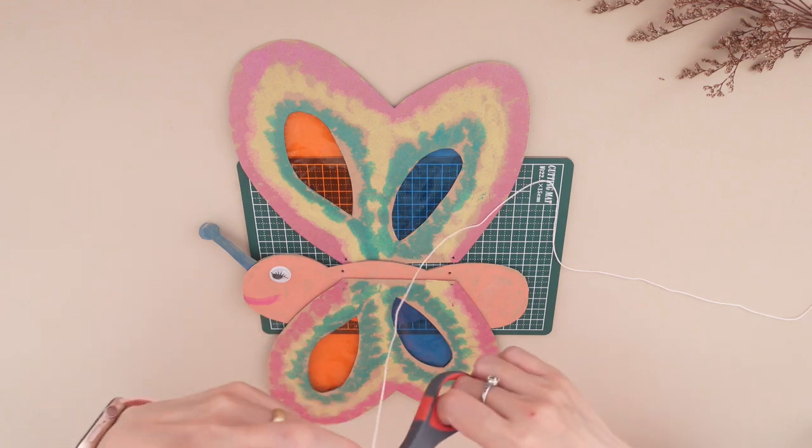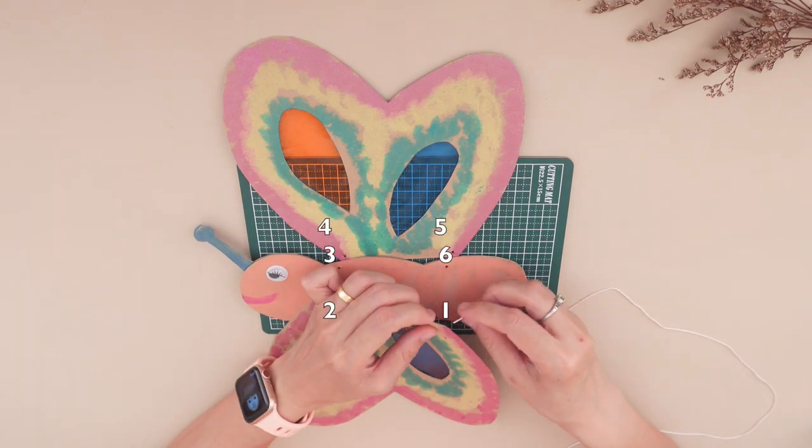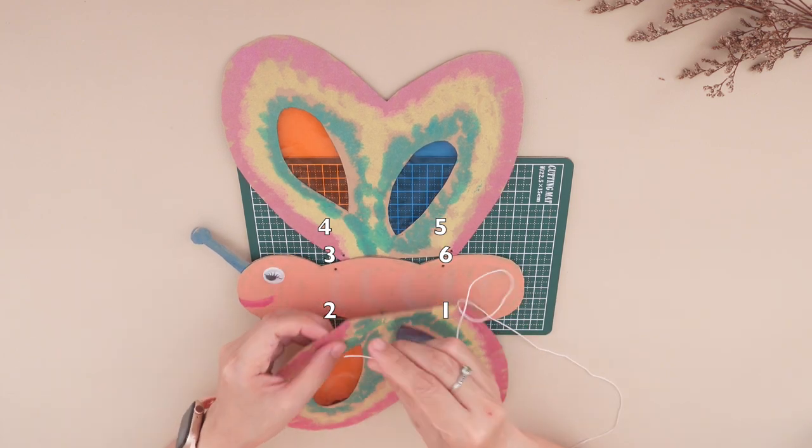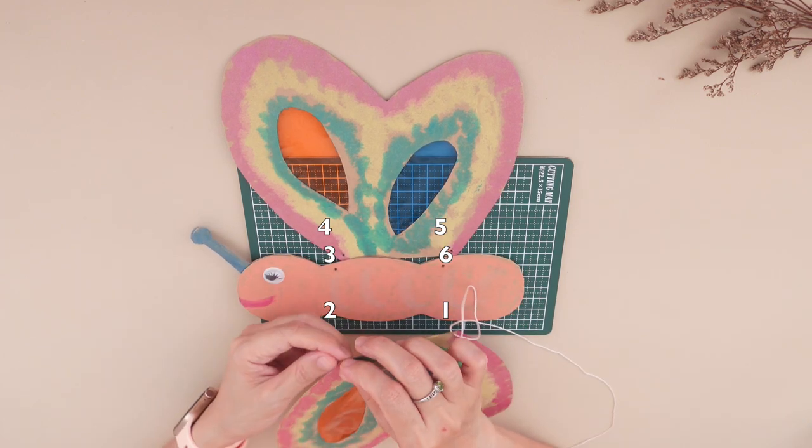Cut about 12 inches of string and insert it starting underneath the bottom wing or number one. Then insert the string following the number sequence.